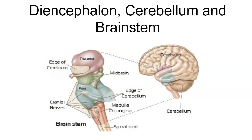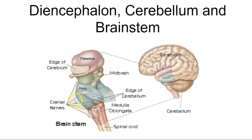In a previous video, we looked at the first division of the brain, the cerebrum. In this video, we're going to look at the other three divisions: the diencephalon, the cerebellum, and the brainstem. Roughly speaking, here's the diencephalon, here is the brainstem, and then over here is the cerebellum.